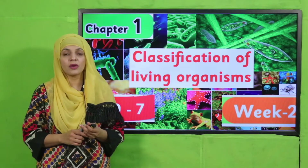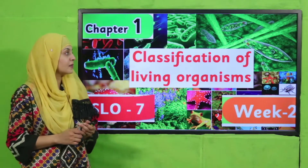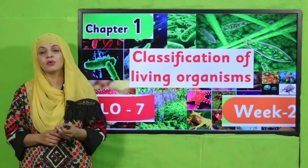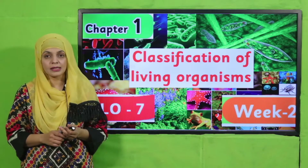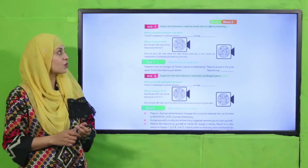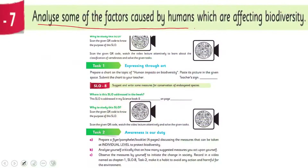As you know, we are on chapter number one of your Science 5 remedy pack. The name of our chapter is Classification of Living Organisms. We are going to discuss SLO number seven. According to this SLO, students will be able to analyze some of the factors caused by humans which are affecting biodiversity.